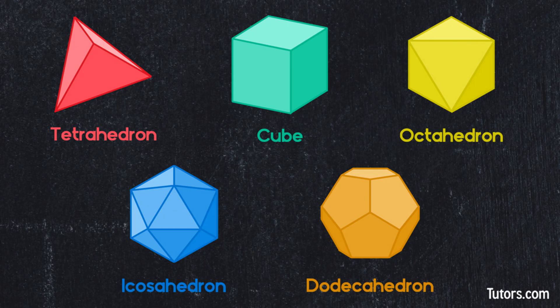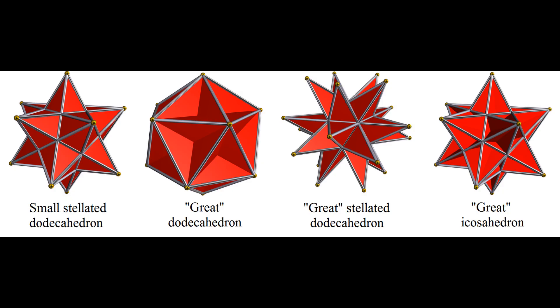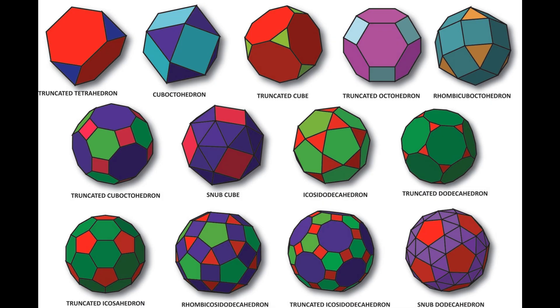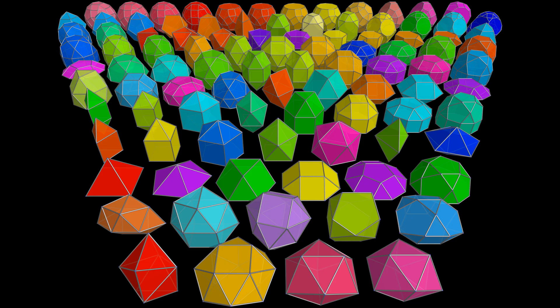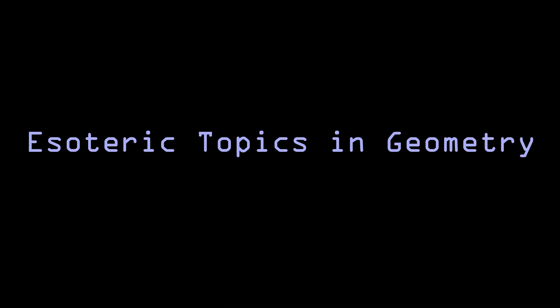In three dimensions there are a few groups of polyhedra with special names. There's the five Platonic solids, the four Kepler-Poinsot polyhedra, the thirteen Archimedean solids, the thirteen Catalan solids, and the ninety-two Johnson solids. In four dimensions these all have analogs, but a lot of them are more abundant than in 3D.